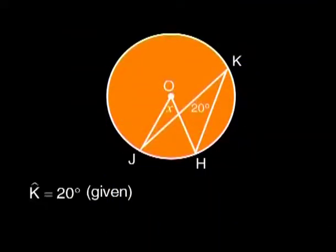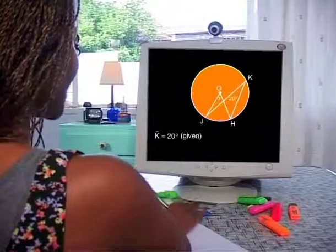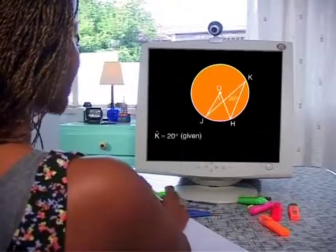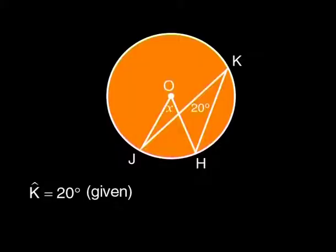Let's see how you can use these theorems on some geometry problems. In the next three diagrams, calculate the value of the unknown angle X. The first one is easy. We know that angle K is 20 degrees, so angle X at the center will be twice that, which equals 40 degrees.